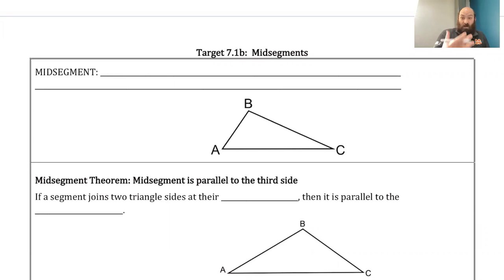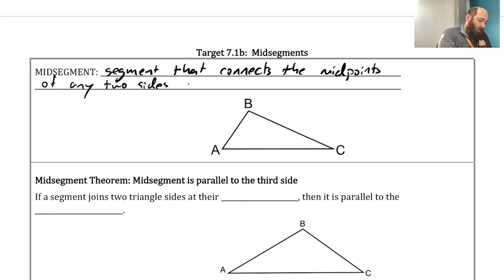This is a very specific type of segment that we create with our triangle proportions. So let's start with our definition here. A mid-segment is a segment that connects the midpoints of any two sides in a triangle.